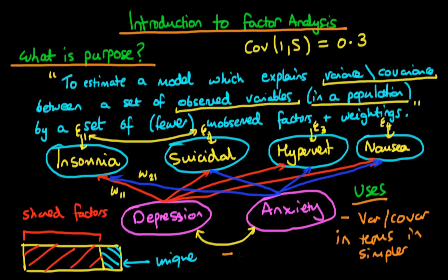The other main use of factor analysis — typically in psychology — is for testing a particular theory. There might be some theoretical evidence which links depression and anxiety with each of these four characteristics, and what we're trying to do is test whether it is actually likely the case that our theory holds up when we compare it to the data.